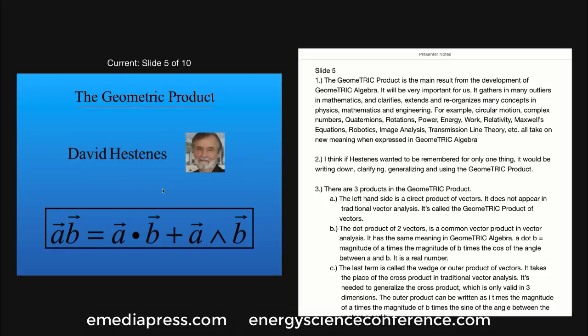The geometric product is the main result from the development of geometric algebra. It will be very important for us. It gathers in many outliers in mathematics and clarifies, extends, and reorganizes many concepts in physics, mathematics, and engineering. For example, circular motion, complex numbers, quaternions, rotations, power, energy, work, relativity, Maxwell's equations, robotics, image analysis, transmission line theory, and so forth — all take on new meaning when expressed in geometric algebra.